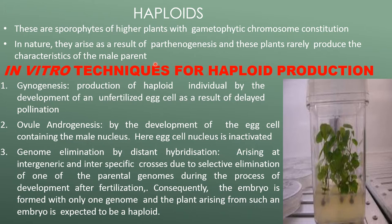In vitro techniques for haploid production include gynogenesis, which is the production of haploid individuals by development of unfertilized egg cells as a result of delayed pollination. In the case of ovule androgenesis, the development of egg cells containing the male nucleus occurs, where the egg cell nucleus is inactivated.